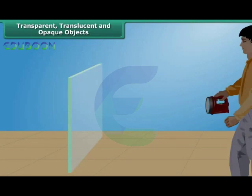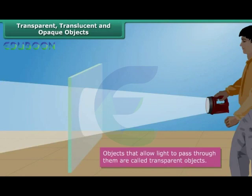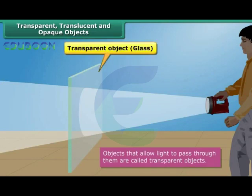Objects are classified as transparent, translucent or opaque depending upon their treatment of light. Objects that allow light to pass through them are called transparent objects. Most of the light falling upon a transparent object passes through it to the other side, thereby allowing us to see through them. Glass, clean air, pure water, etc. are examples of transparent objects.